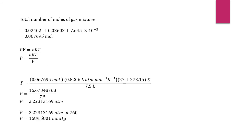So now we will determine the pressure by using ideal gas equation. Total number of mol of gas mixture is equal to 0.067695 mol.